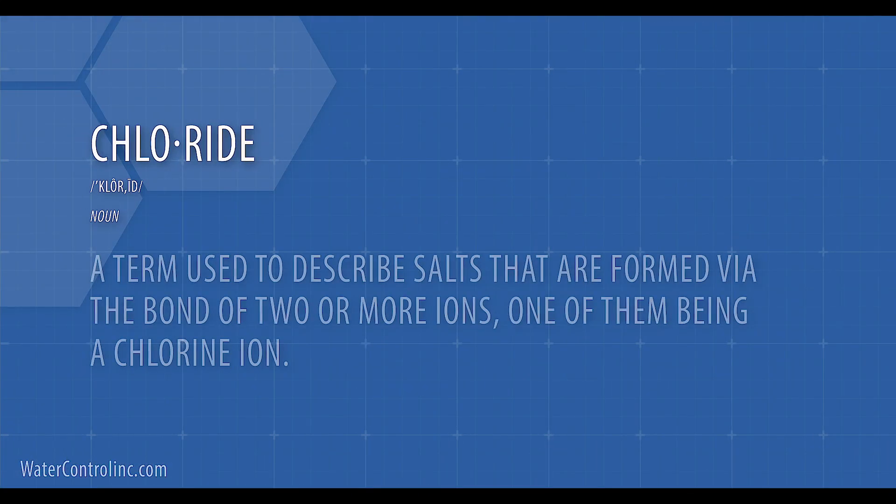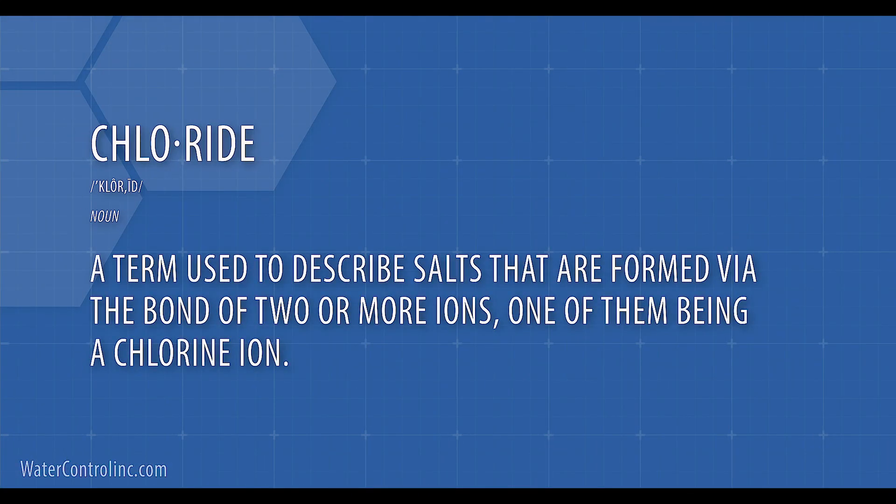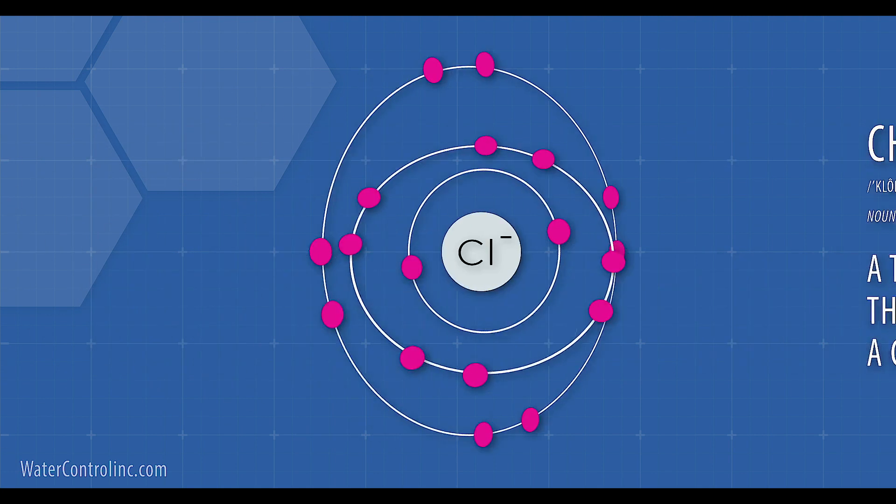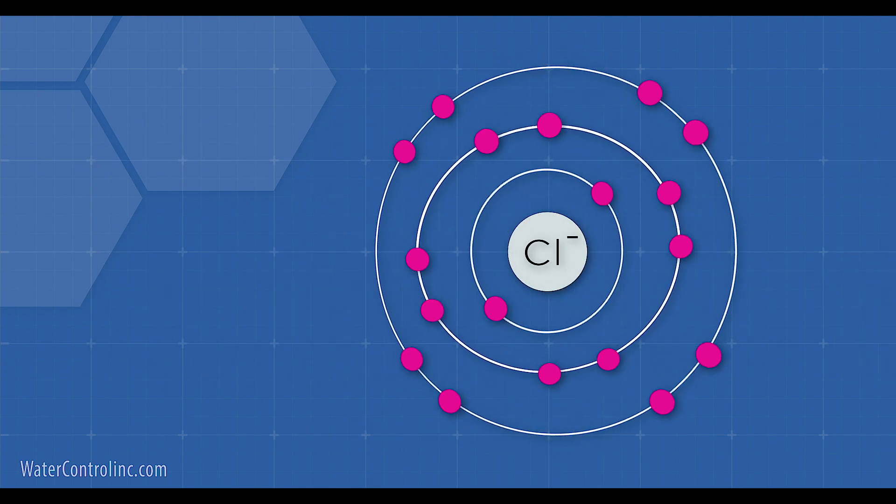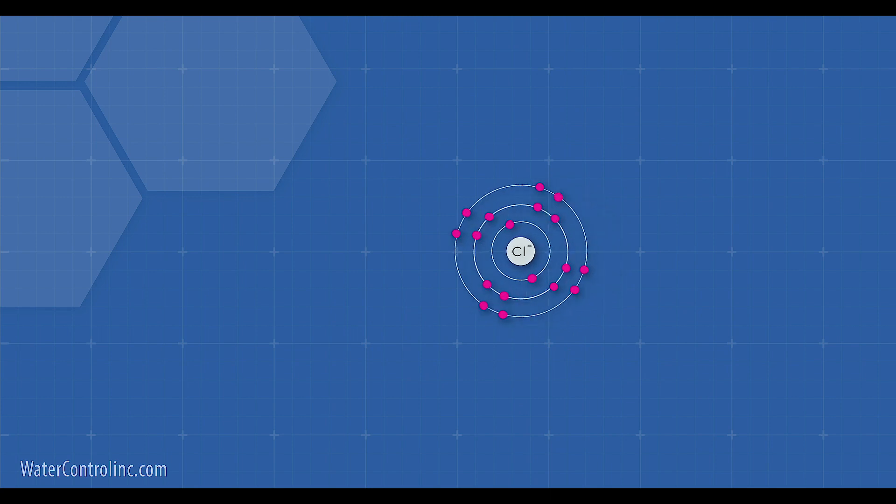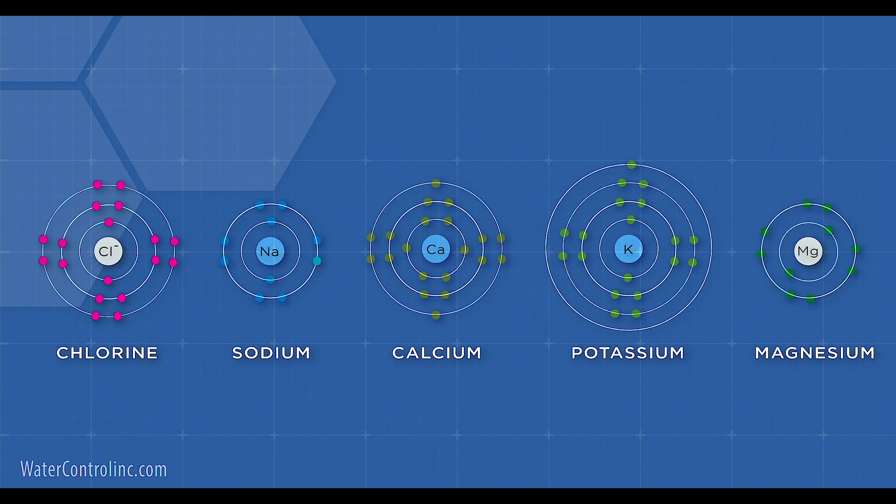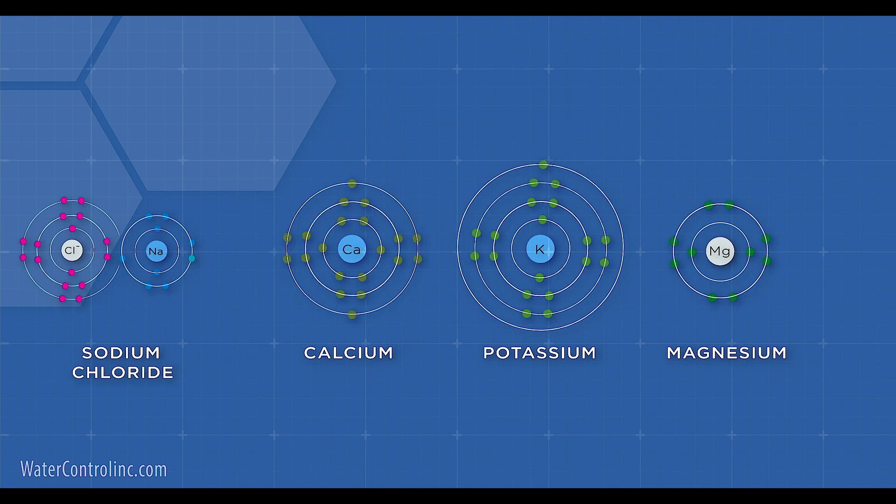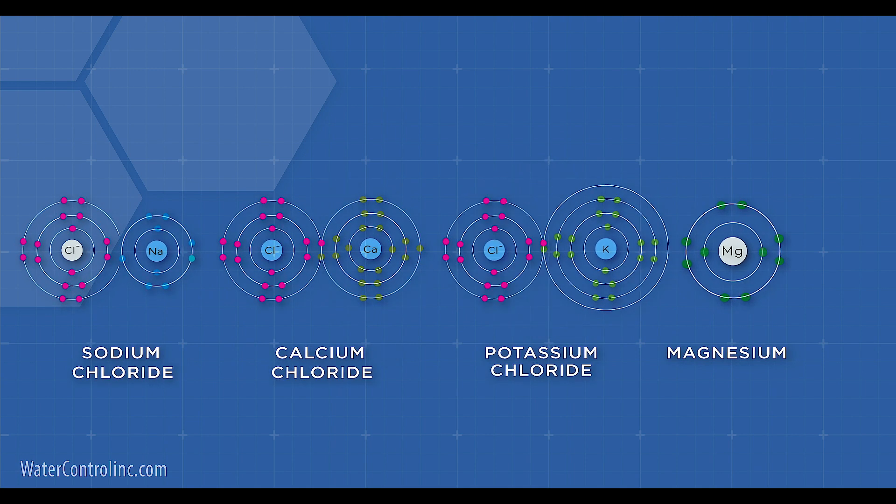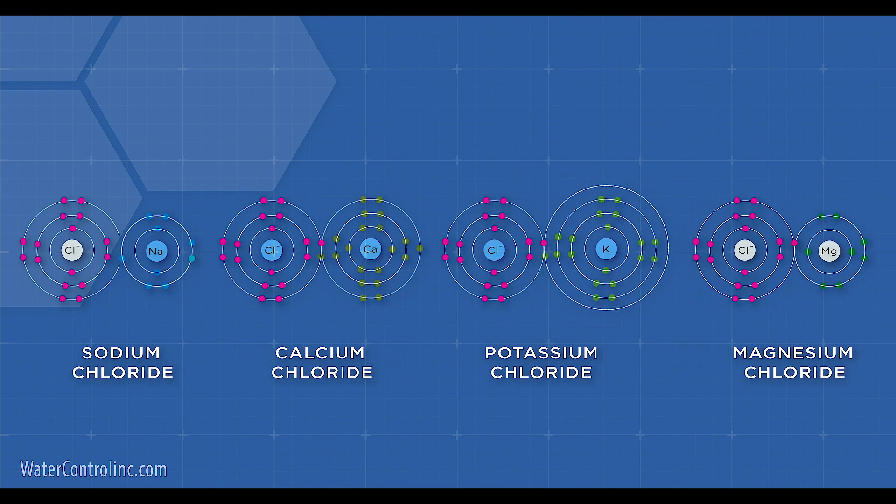The word chloride is a general term used to describe various salts that are formed via the bond of two or more ions, or small electrically charged atoms, one of them always being a chlorine ion. In water we most commonly see chlorine bonded with sodium, calcium, potassium, or magnesium, forming sodium chloride, calcium chloride, potassium chloride, or magnesium chloride, respectively.